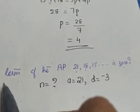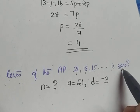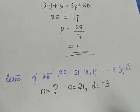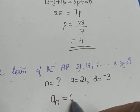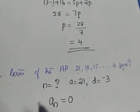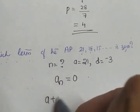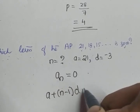And what is the question? Which term of the AP is 0? We have to find which term is 0. So what we will do is we will take a_n as 0. What is a_n? What is the formula? a + (n-1) × d = 0.